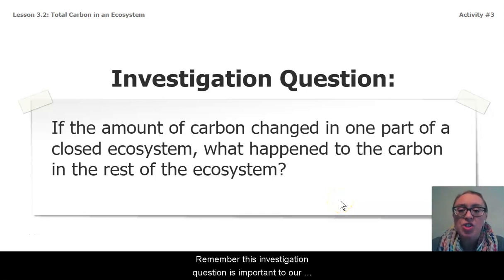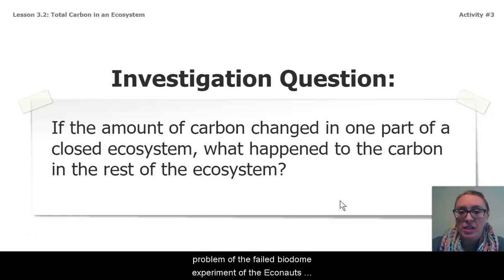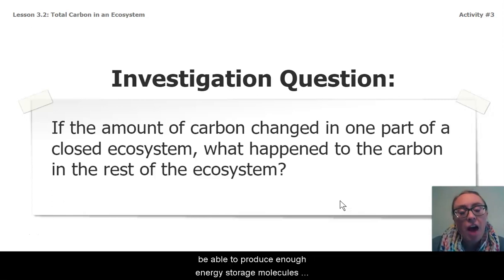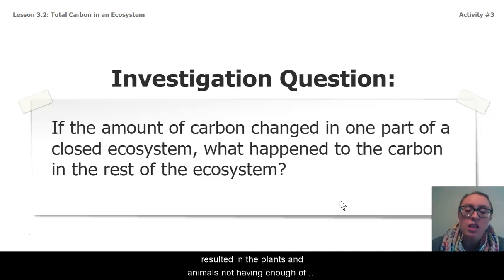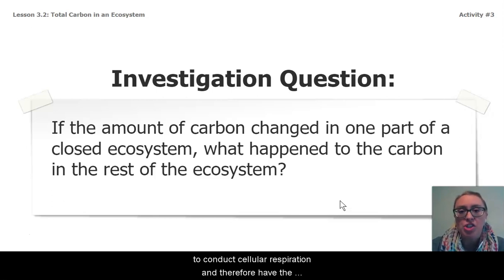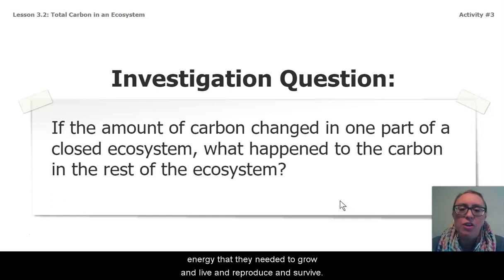Remember, this investigation question is important to our problem of the failed biodome experiment of the Econauts because the biodome did not have enough carbon dioxide in the atmosphere, which then caused the producers to not be able to produce enough energy storage molecules through the process of photosynthesis, which then resulted in the plants and the animals not having enough of those energy storage molecules to conduct cellular respiration and therefore have the energy that they needed to grow and live and reproduce and survive.